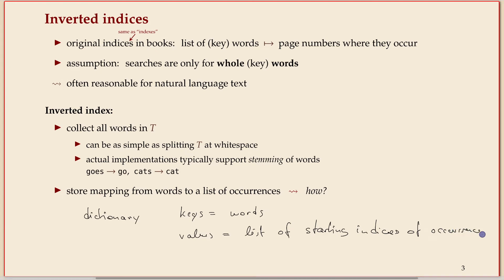And you've seen data structures, how to do this. Any suggestions? How would you do it if I give you a text file and you want to store an inverted index?